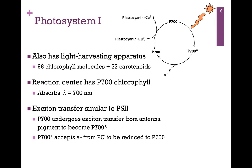In this case, the reaction center has a P700 chlorophyll — that is, it absorbs a wavelength of 700 nanometers. Recall from an earlier lesson that we can never pass on 100% of the energy we receive. By the time the electrons are passed to Photosystem I, they carry less energy and need to absorb light of longer wavelength. Therefore, it's P700 as compared to the P680 in Photosystem II.